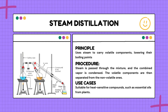In the procedure of steam distillation, steam is passed through the mixture and acts as a partner, encouraging the volatile components to turn into vapor. The mixture and the steam combine to create a combined vapor containing both the steam and the vaporized volatile components. This combined vapor is then condensed back into a liquid, giving you a mix of water and the volatile components. The final step involves separating the volatile components from the water.